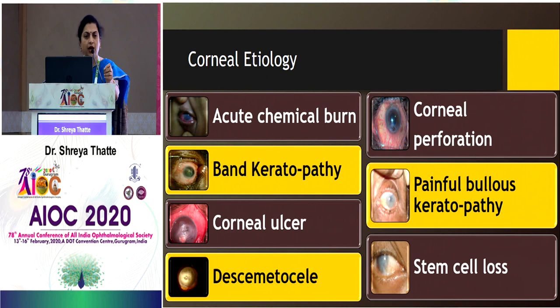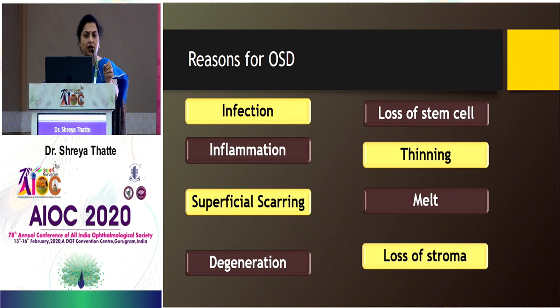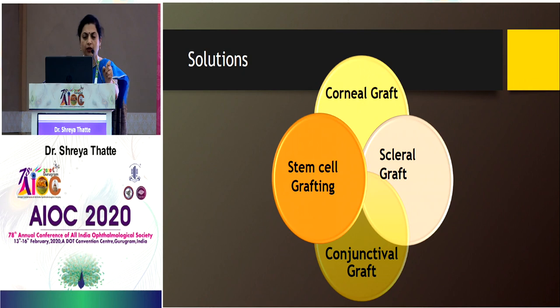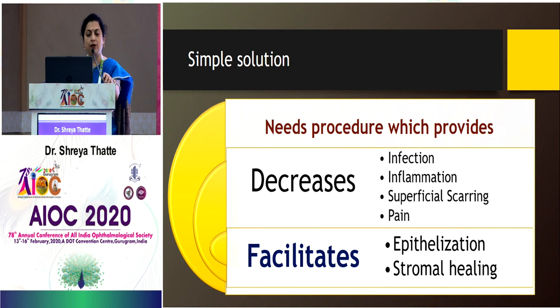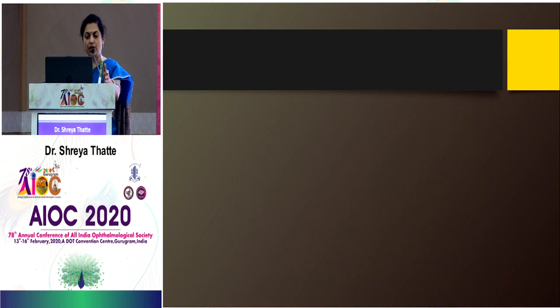The reasons for these ocular surface diseases are infection, inflammation, degeneration, thinning, melt, and loss of stroma. Solutions include different grafts — corneal, scleral, conjunctival, stem cell grafting. But sometimes we need a single procedure that can decrease infection, inflammation, keratitis, and pain while also facilitating epithelialization and stromal healing. Amniotic membrane provides all these facilities through its properties: its basement membrane helps cell migration; proteins facilitate cell adhesion; hyaluronic acid decreases scar formation; macrophages provide anti-inflammatory effect; and nerve growth factor decreases ocular pain.